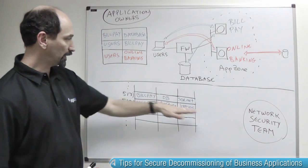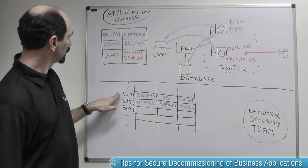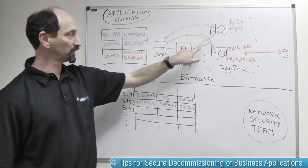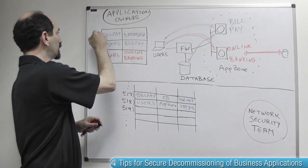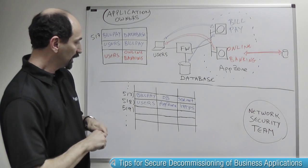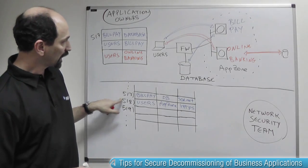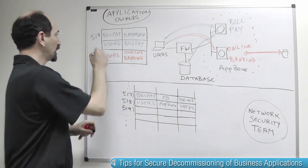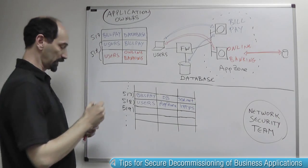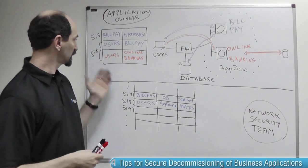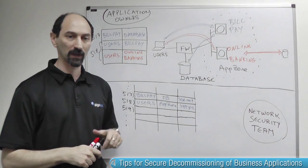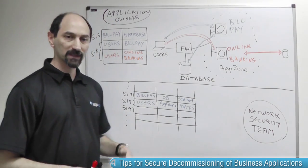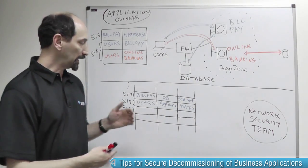The network security team might write rule 517, allowing traffic from the bill pay server to the database — supporting that blue connectivity requirement. They would also write rule 518, allowing traffic from the user area to the whole application zone. Through that single rule, they support the connectivity needs of multiple applications — both the blue and the orange applications sharing the same rule. This is very common practice because it makes the firewall policy more compact, easier to manage, and more efficient.